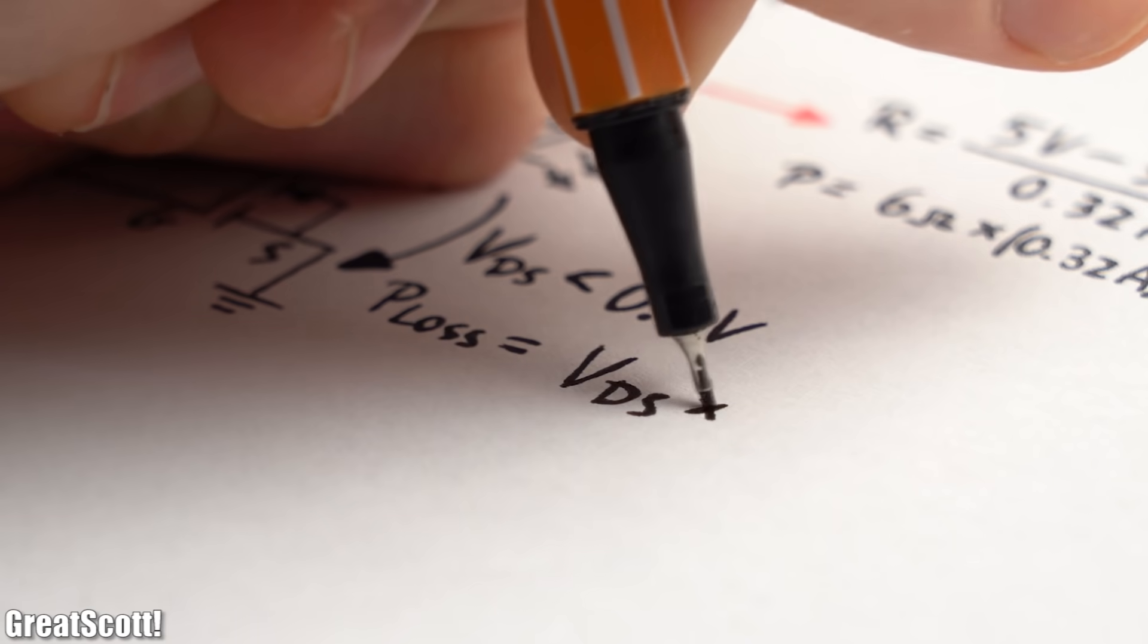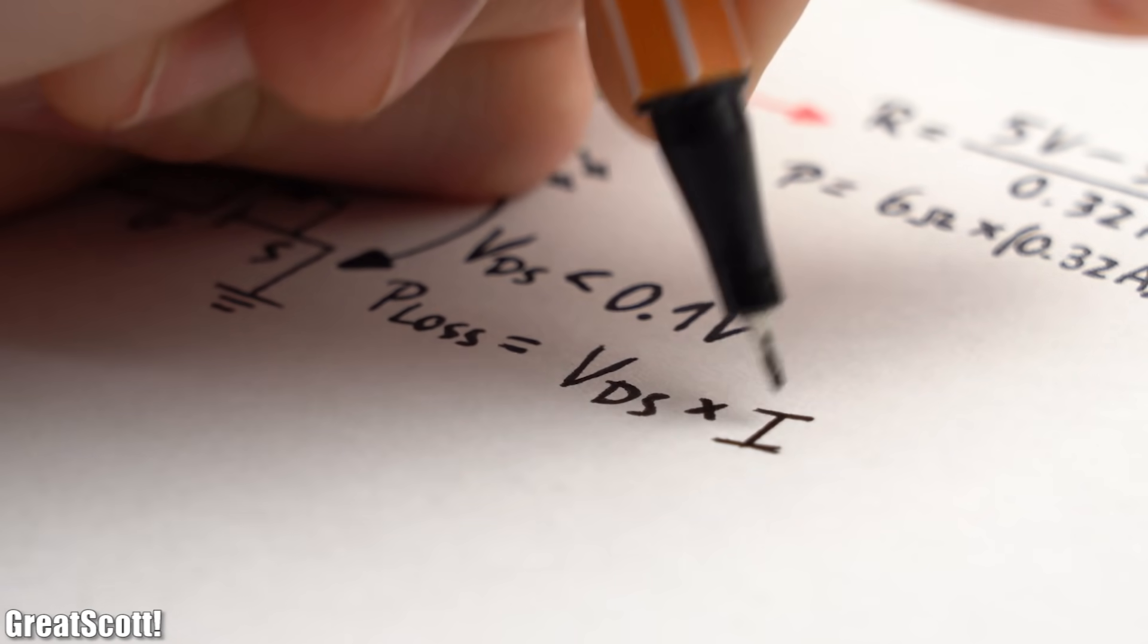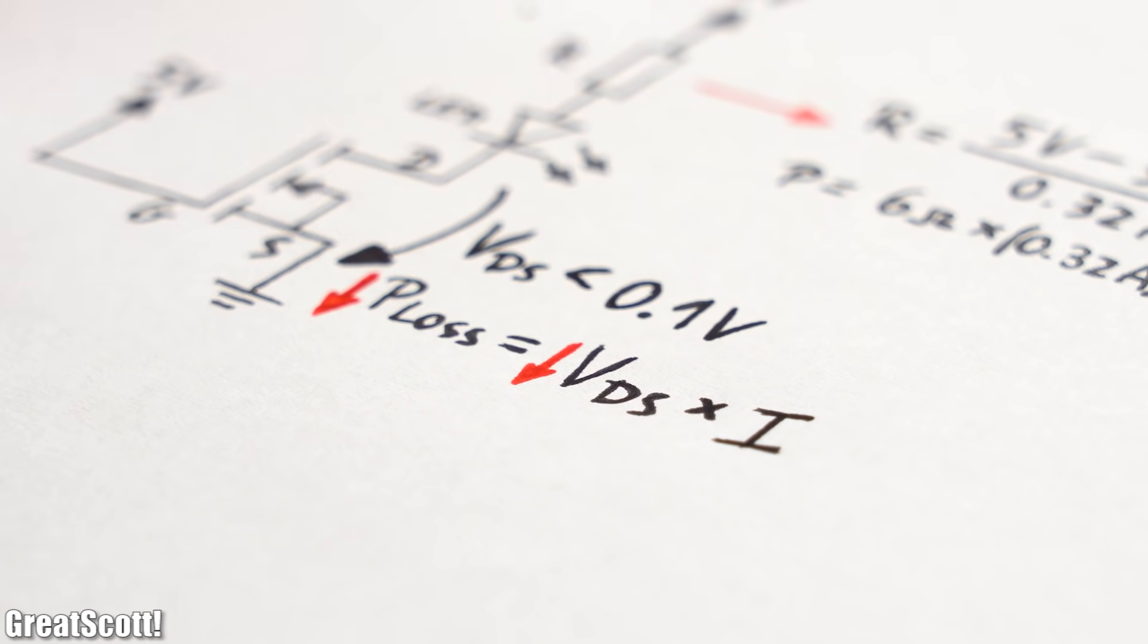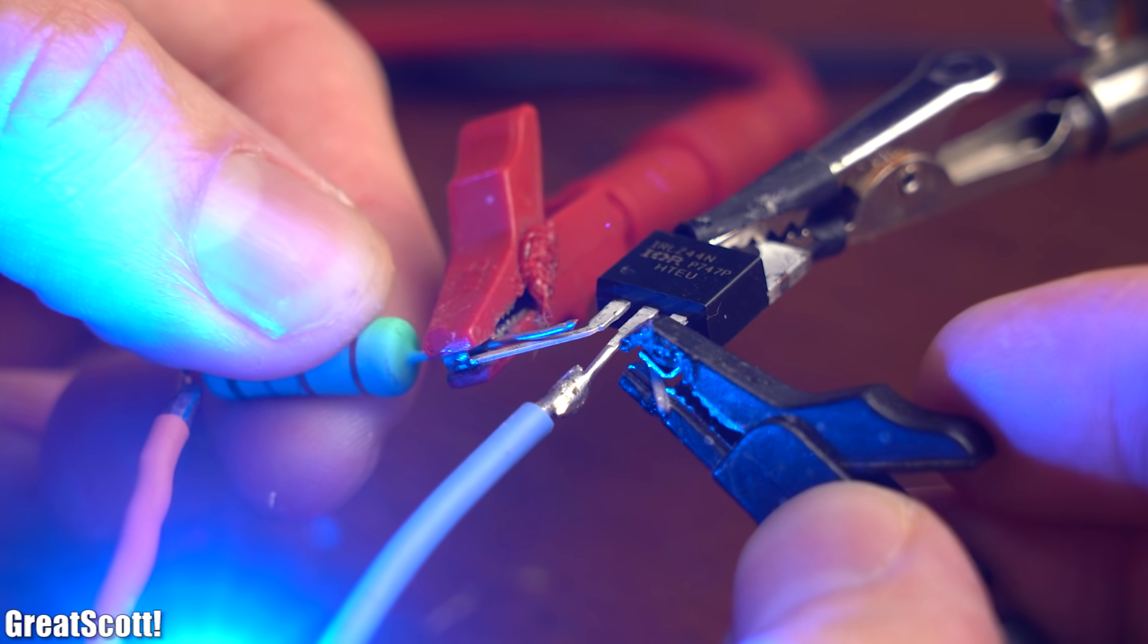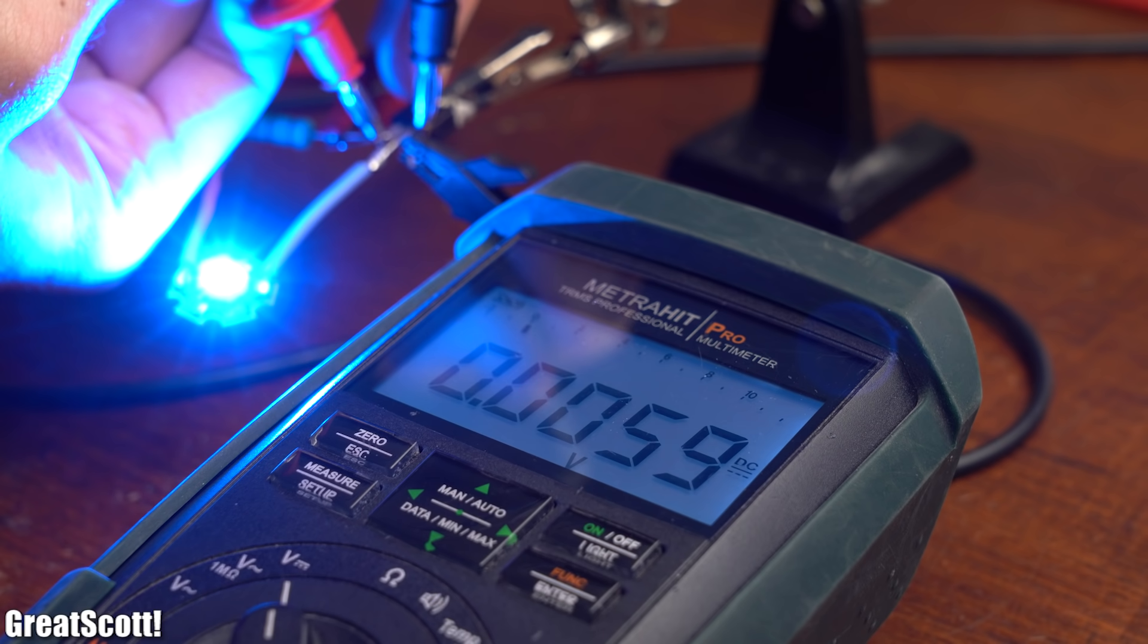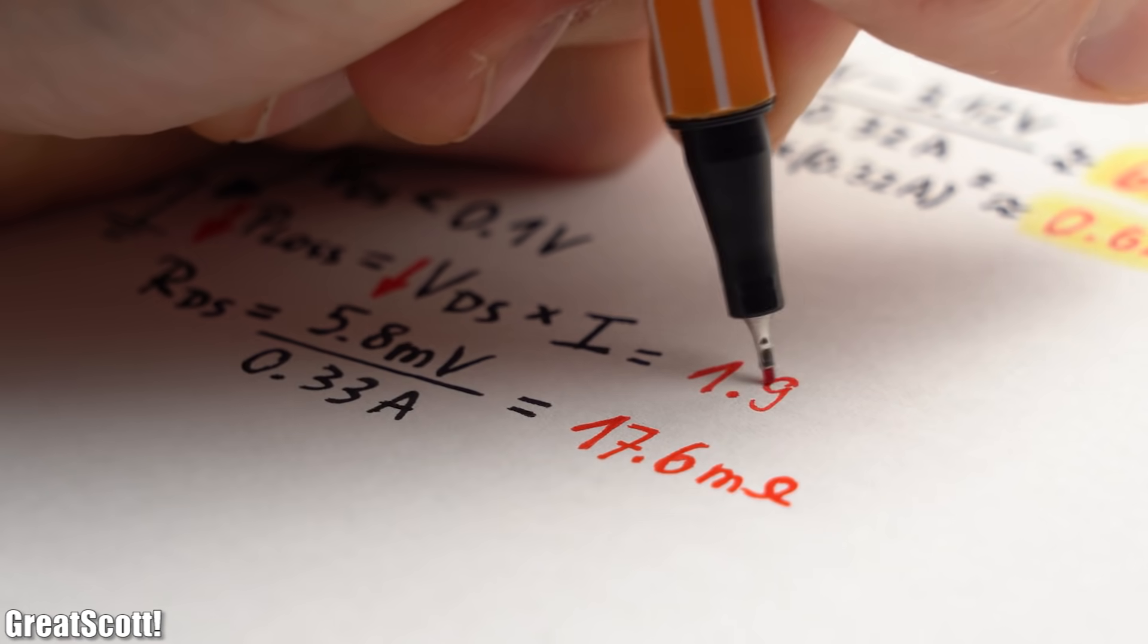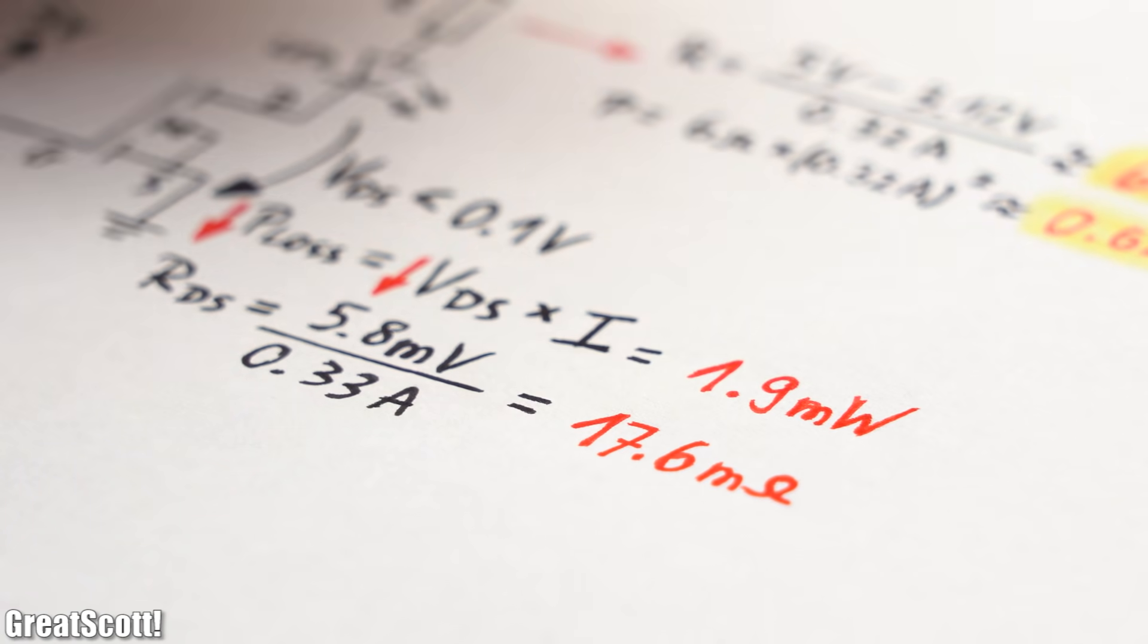This is of course beneficial since the drain-source voltage multiplied by the flowing current equals our power losses, and we want to keep those as small as possible. So let's just connect our supply voltage to the gate, and as you can see the LED lights up without any problems. The drain-source voltage is around 5.8mV at a current flow of 330mA, which equals a resistance of 17.6mΩ and a power loss of 1.9mW.